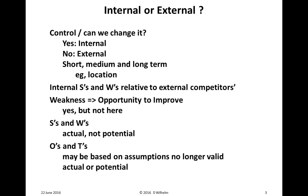One thing most of us think about is that any weakness we have is an opportunity to improve — not here. Weaknesses are actual and internal. Opportunities are external and positive. So if we do have a weakness, in general it's an opportunity to improve and turn it into a strength, but not in SWOT terms. Opportunities are those external, actual, or potential items. Strengths and weaknesses are internal, actual, not potential.